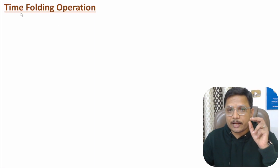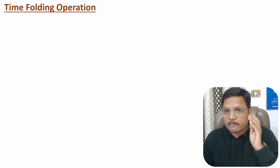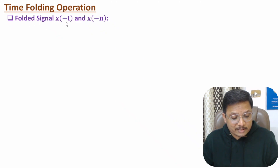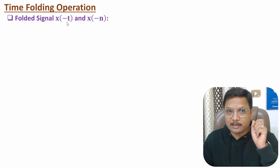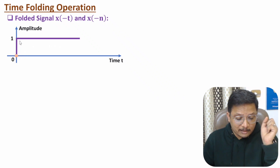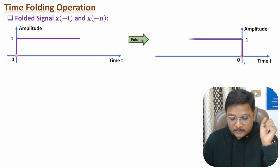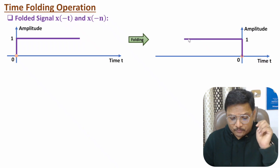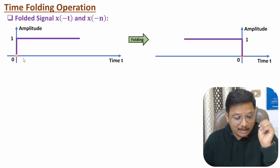Now I'll explain the next operation: time folding. In time folding, we generate the mirror image of a given signal. If you have signal x(t), the folded signal will be x(-t). In the discrete domain, if you have x(n), the folded signal is x(-n). Here we have a step signal, and performing x(-t) shows the signal going in the opposite direction — amplitude 1 for t ≤ 0.